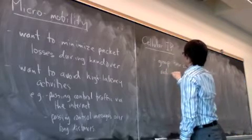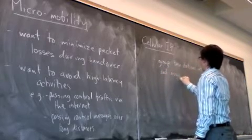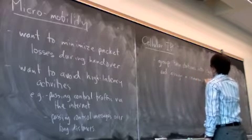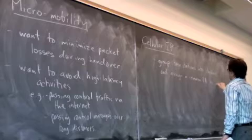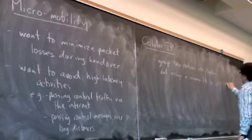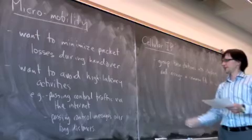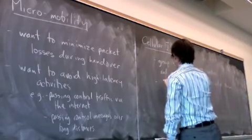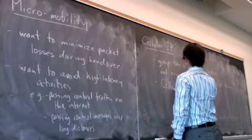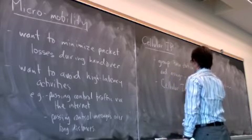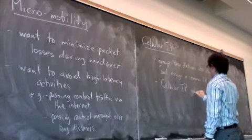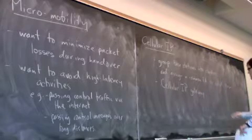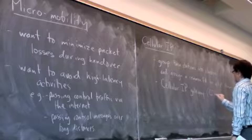And we assign a common foreign agent to all of them. The common foreign agent has a special name, and that is called the cellular IP gateway. And I'm going to abbreviate that to CIP GW.